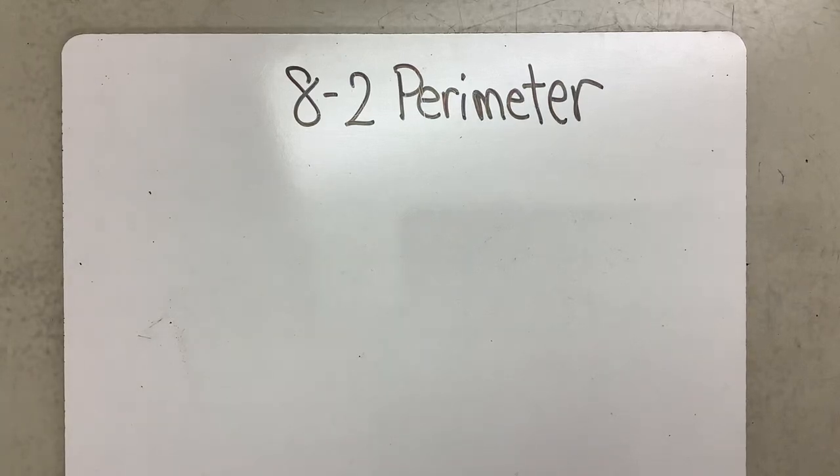Alright, so this is going to be 8-2 in our book. It is talking about perimeter but also composite figures. Now when we do the composite figures, these are figures that we're going to put together more than one item.